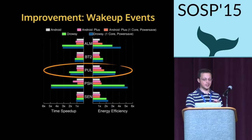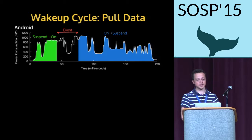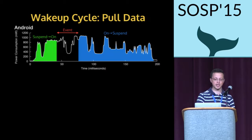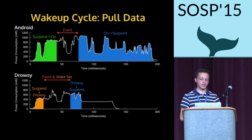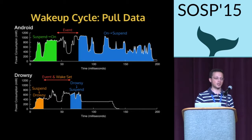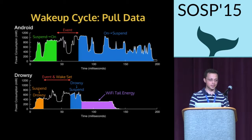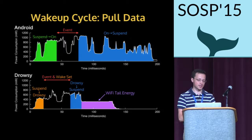Going back to the pull wakeup power trace to see where the energy benefit appears: in Android at the top, we have power consumption on the y-axis and time in milliseconds, with transitions and event energy marked. In Drowsy at the bottom, the suspend-to-drowsy transition is small, followed by event handling — during which the Wi-Fi device is woken up as needed. Then a drowsy-to-suspend transition follows. An interesting extra tail from Wi-Fi tail energy is visible in Drowsy, which is otherwise embedded and obscured in the Android trace by the much larger on-to-suspend transition. Drowsy is so fast that it actually exposes this in the power trace.